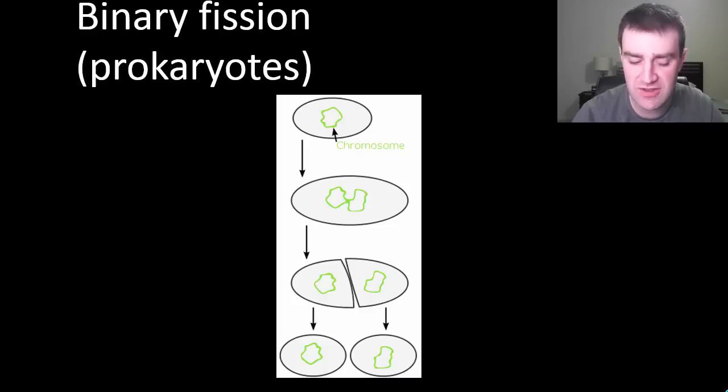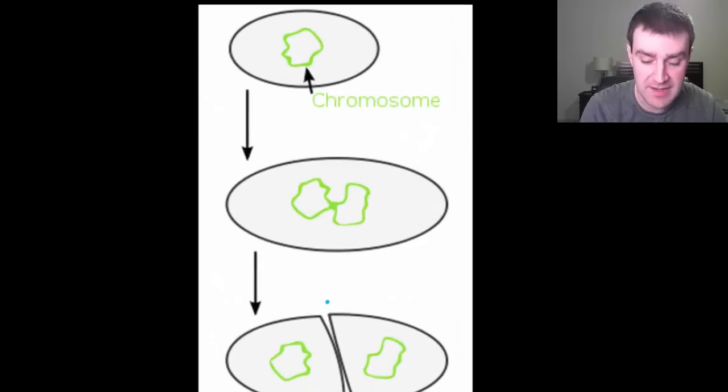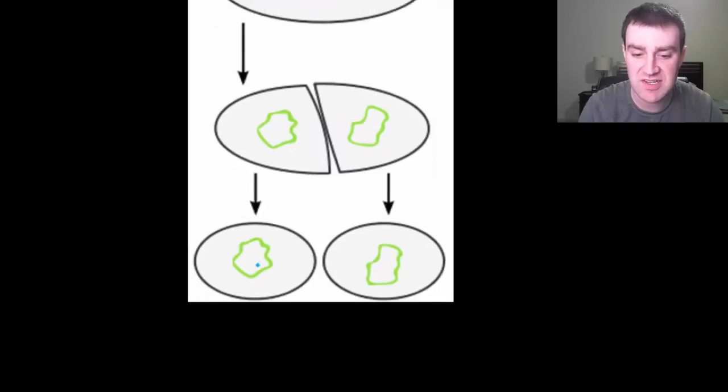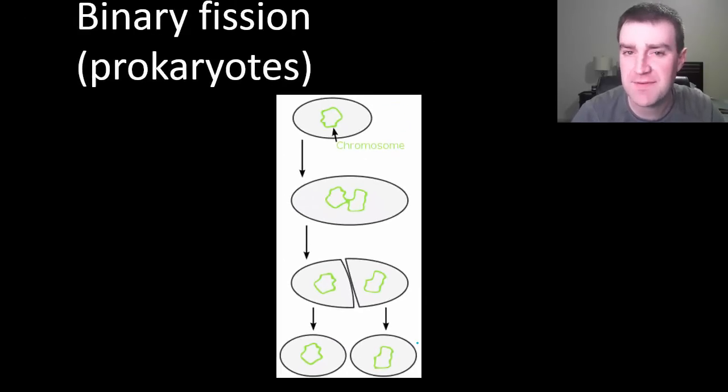Whenever we talk about cell division really the goal is going to be to think about how we distribute the DNA to the new cells so that they have the instructions for building all their protein workers. And so since bacteria only have one little piece of DNA it's pretty easy process to copy it and then distribute it to the new cells and then just to split the cells up.